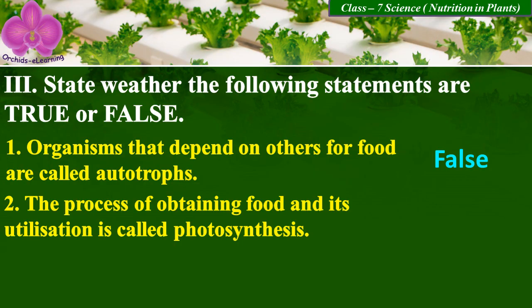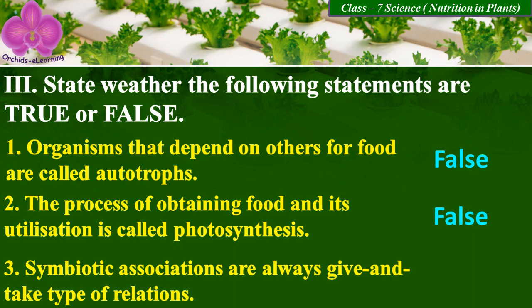The process of obtaining food and its utilization is called photosynthesis. False. Symbiotic associations are always give-and-take type of relations. True.